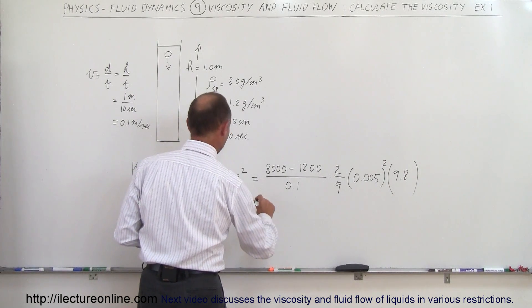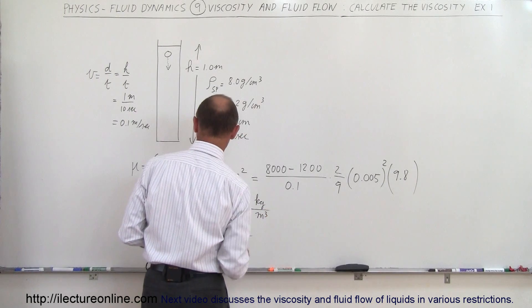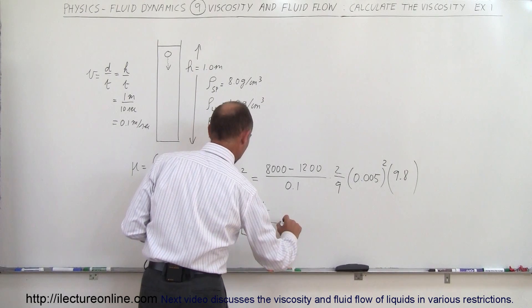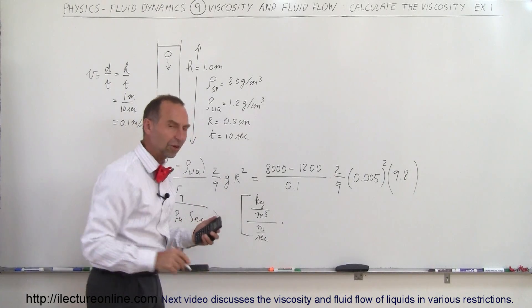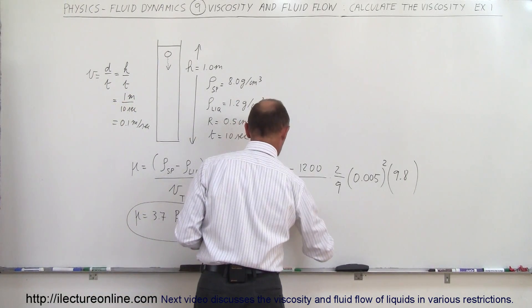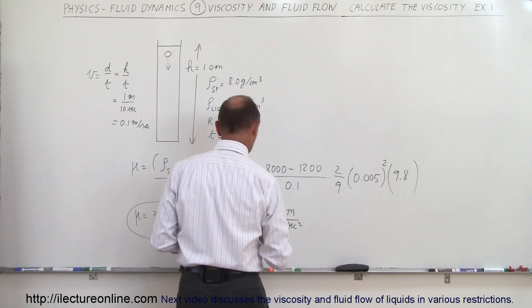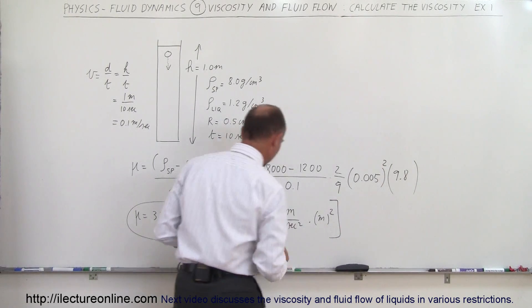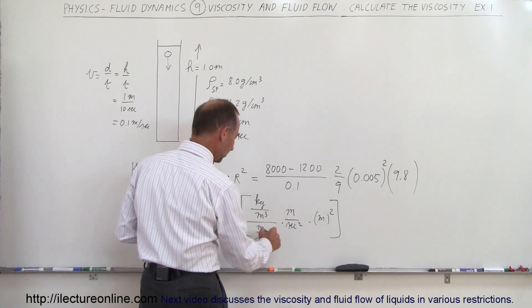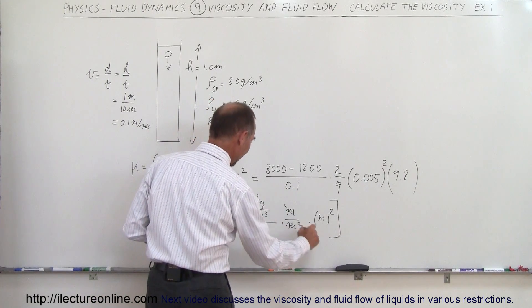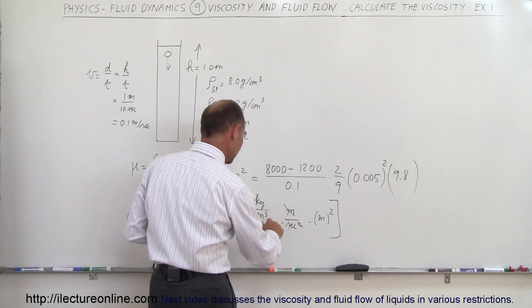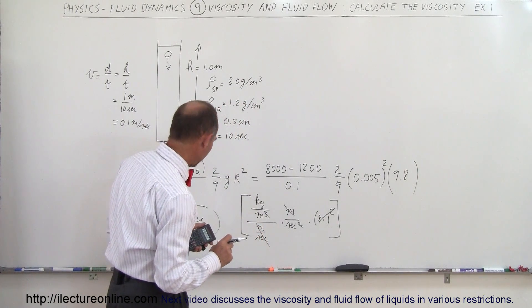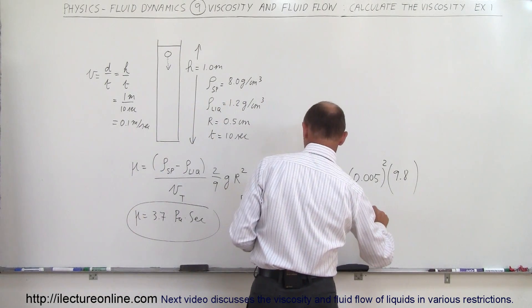Looking at the units: density in the numerator is kilograms per cubic meter. Velocity is meters per second. We multiply by g, the acceleration due to gravity, which is meters per second squared — we can put that in the numerator — times the radius squared, where radius is in meters. So we have meters divided by seconds, meter divided by second squared — those cancel — leaving meters squared in the numerator and meters cubed in the denominator.